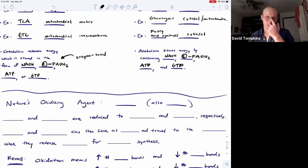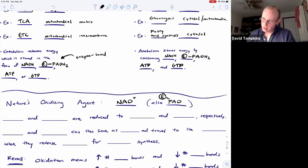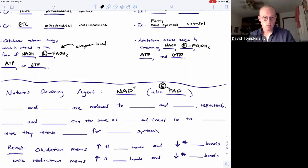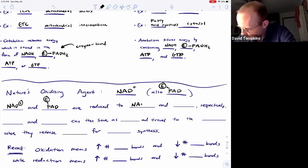So let's talk about this oxidation that I've been alluding to. Nature's oxidizing agent that we're going to see most commonly is NAD+ but we will also see FAD which is enzyme-bound. So NAD+ and FAD are going to take electrons from organic substrates and be reduced to NADH and enzyme-bound FADH2.